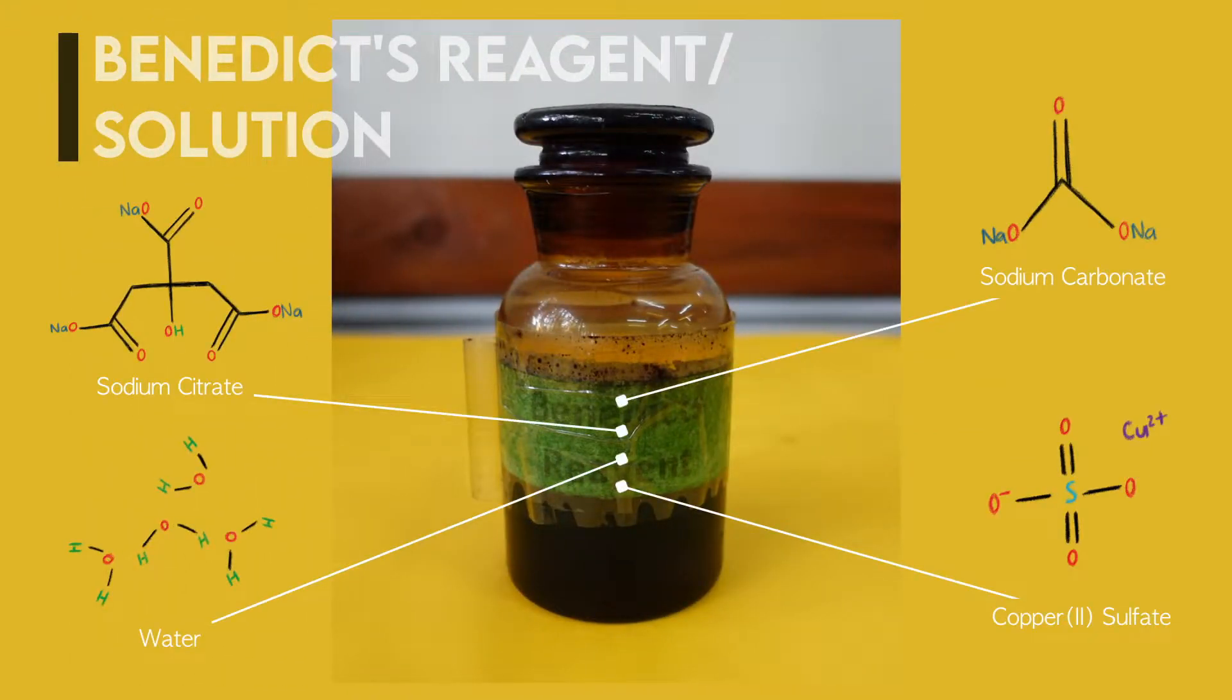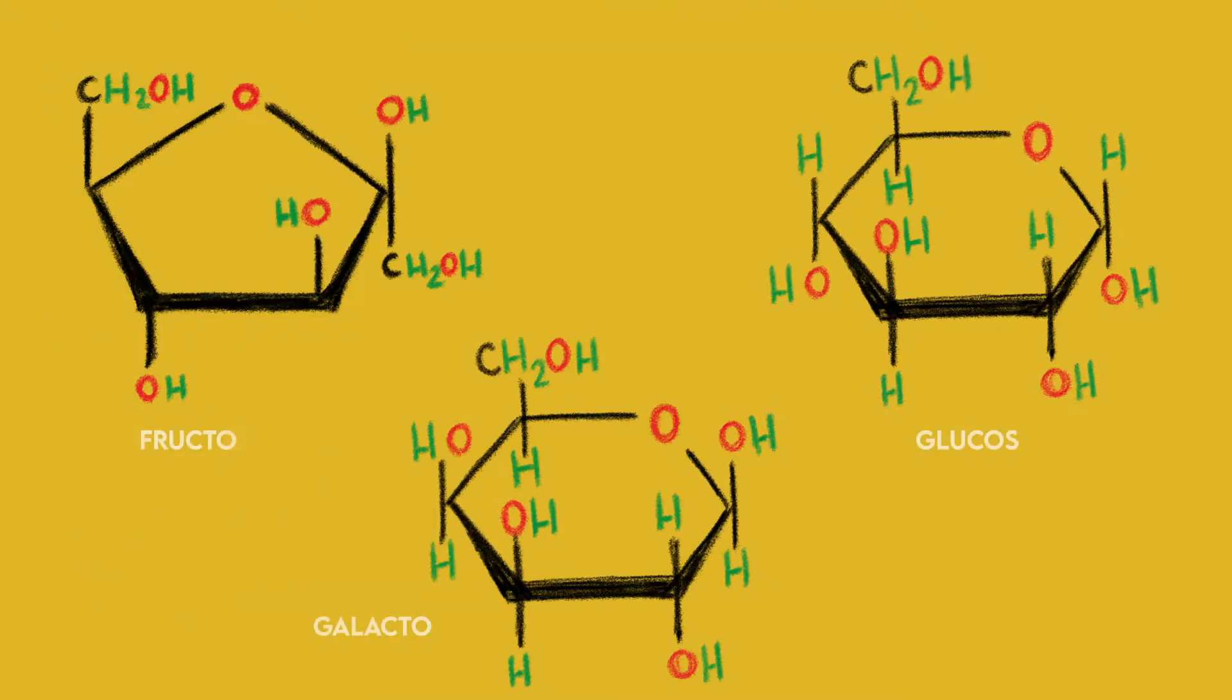This is made up of a mixture of sodium citrate, sodium carbonate, and the pentahydrate of copper-2-sulfate. To understand why Benedict's solution is composed of the following, let's look more closely at how sugars are built.